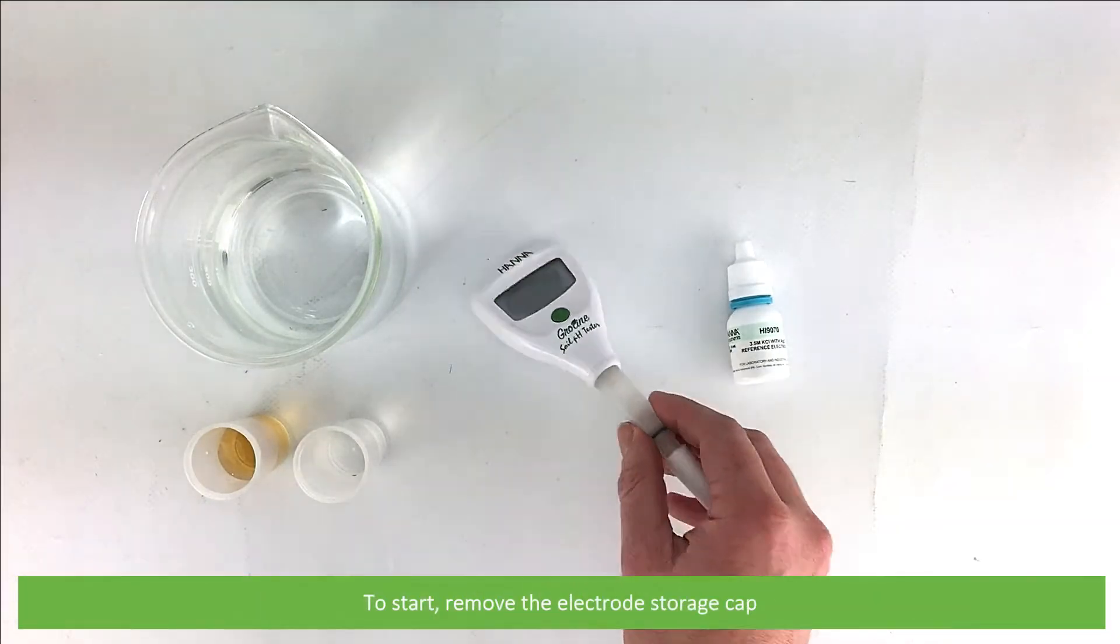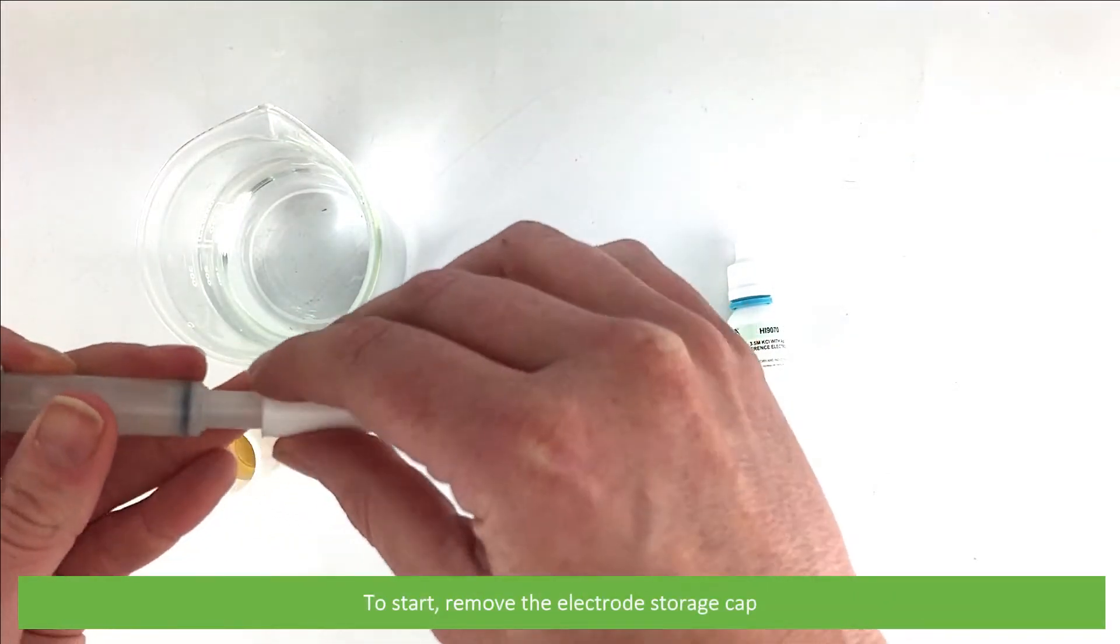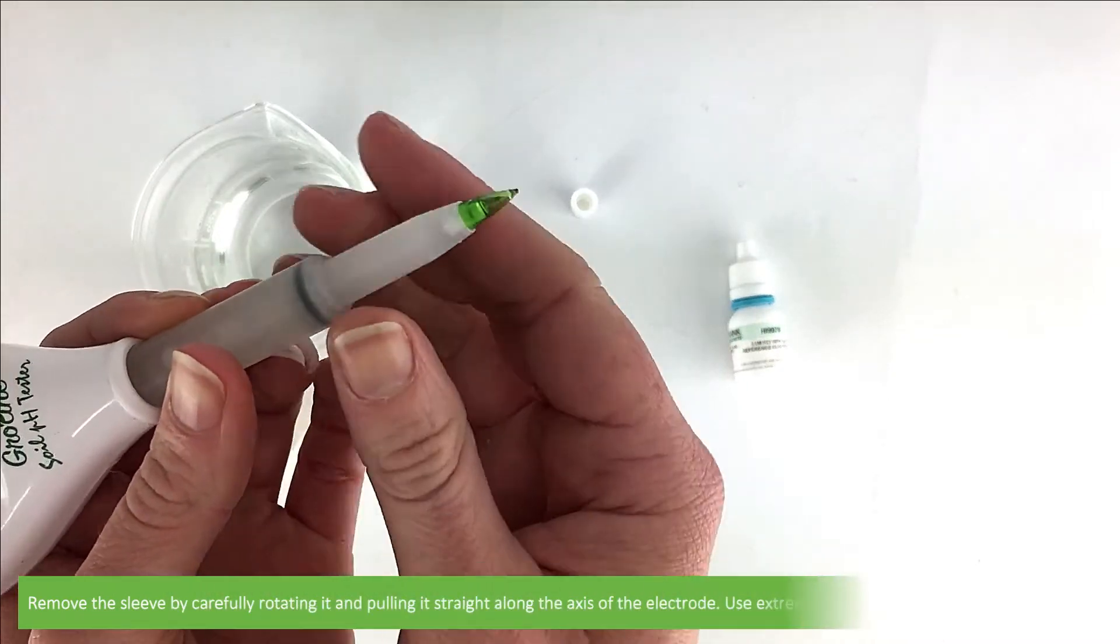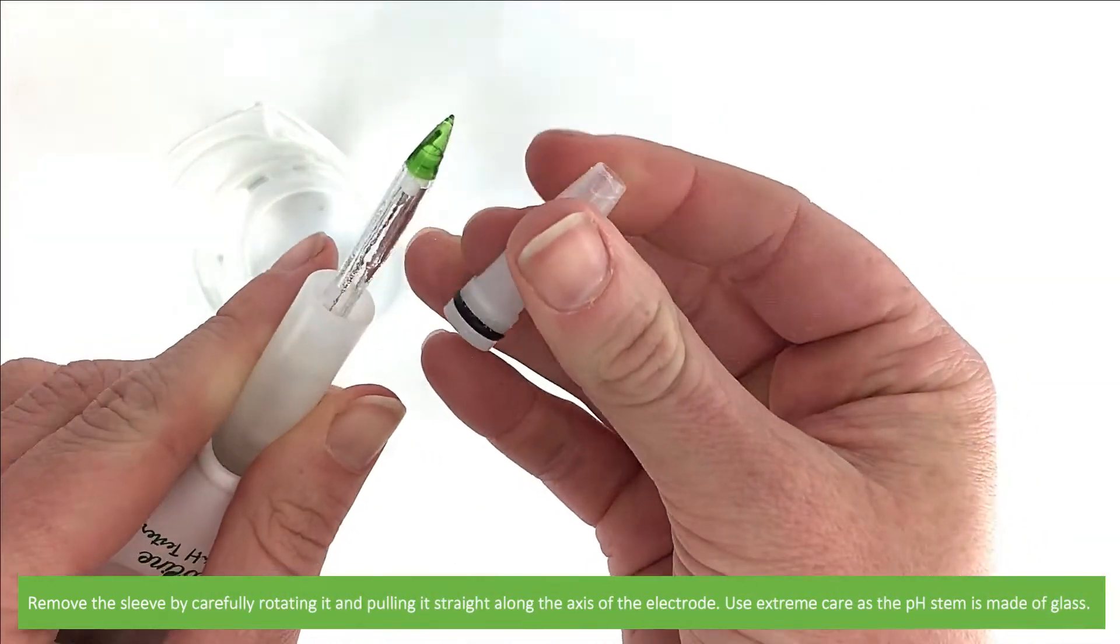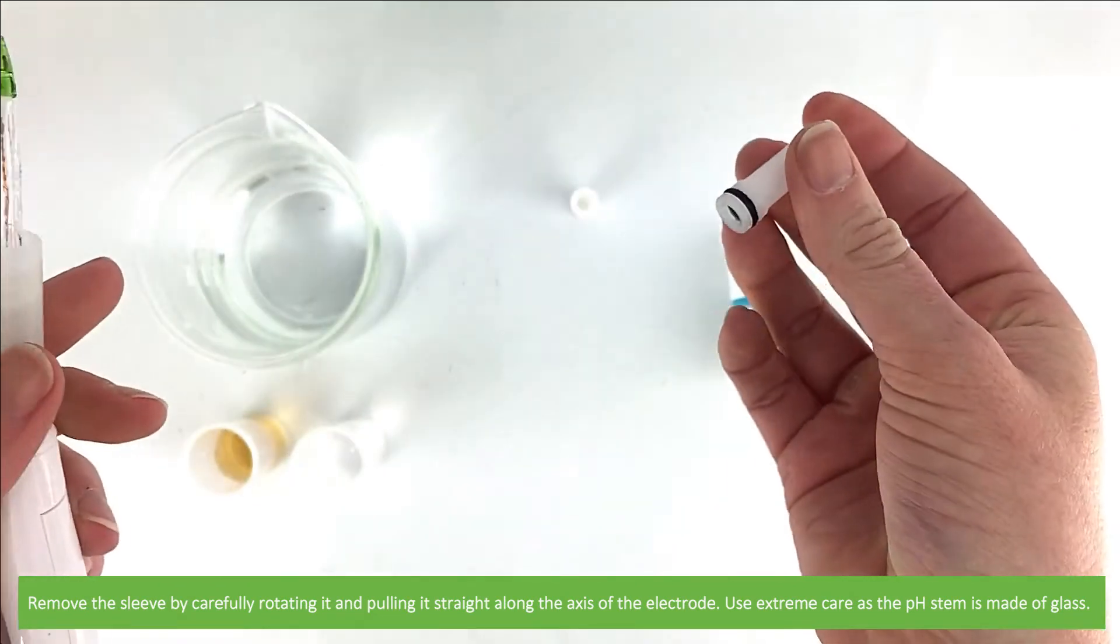To start, remove the electrode storage cap. Then remove the sleeve by carefully rotating it and pulling it straight along the axis of the electrode. Use extreme care as the pH stem is made of glass.